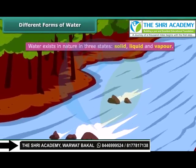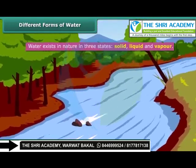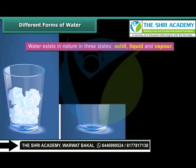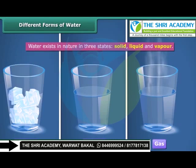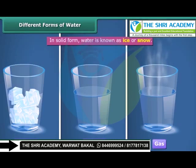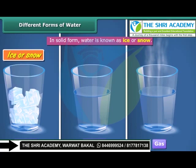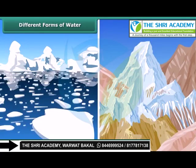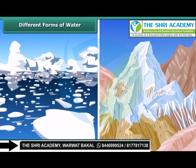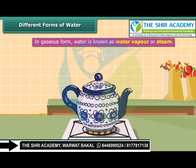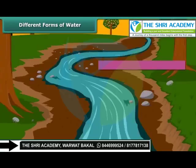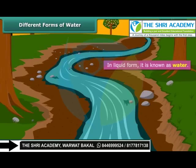Water exists in nature in three states: solid, liquid and gas. In solid form, water is known as ice or snow. It is found at the poles as ice caps and in glaciers and mountains as snow. In gaseous form, water is known as water vapor or steam. But the most common form that water takes is the liquid form, and it is in this form that it is known as water.